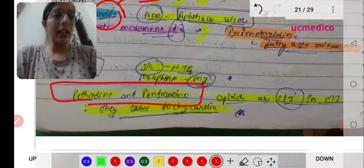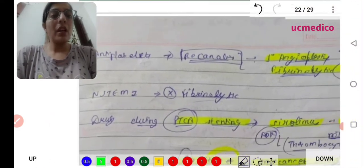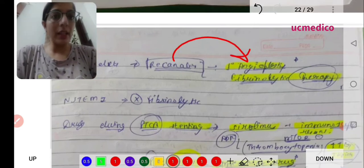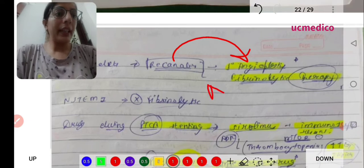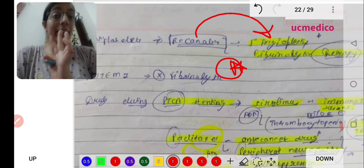Let's move towards the next page. Repeated drugs which cause re-canalization - we use primary angioplasty, so that needs fibrinolytic therapy. In non-ST elevated MI, we don't use fibrinolytic drugs.